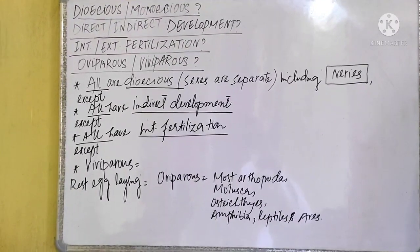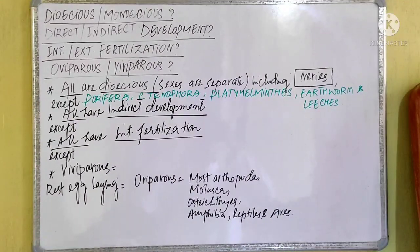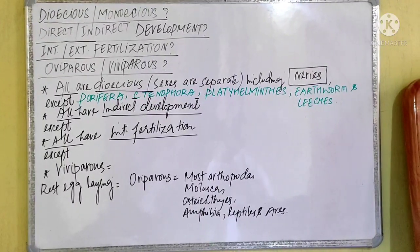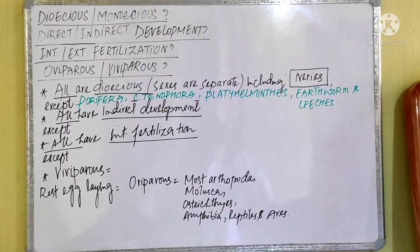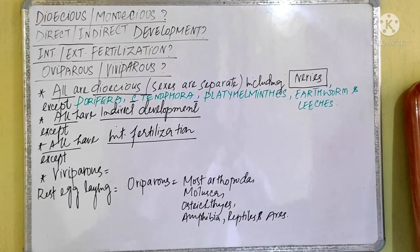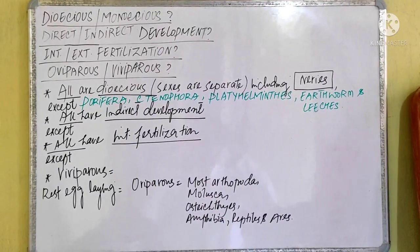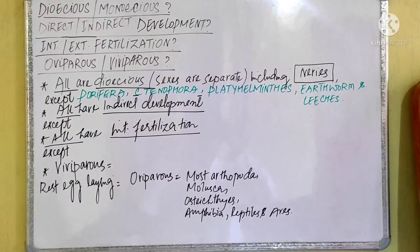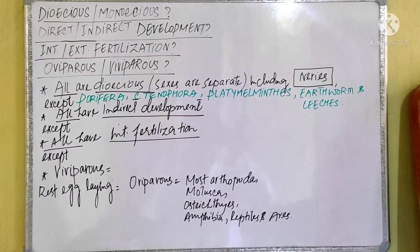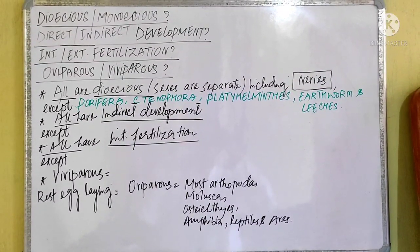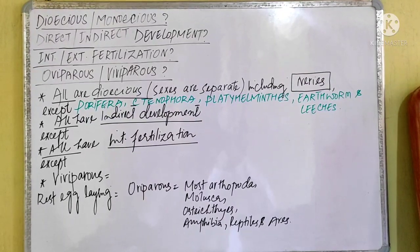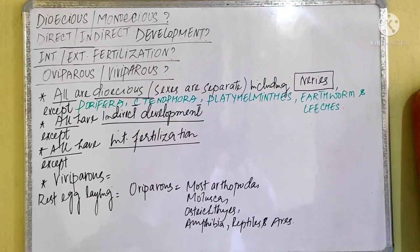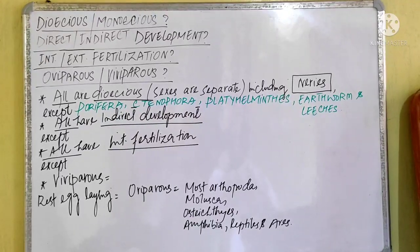The monoecious exceptions are: Porifera, Ctenophora, Platyhelminthes, Helminths, Earthworm, and Leeches. These are monoecious — meaning both sexes are in the same organism. All other animals are dioecious. You only need to remember these exceptions.